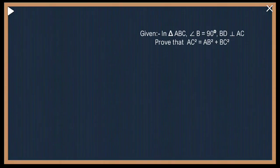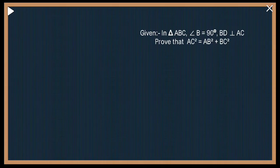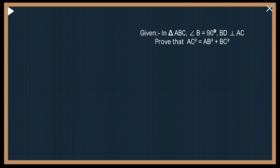Now when we are proving it, let us understand how the question can be asked. So question is, given in triangle ABC, angle B is 90 degrees, BD is perpendicular to AC. Prove that AC² equals AB² plus BC².